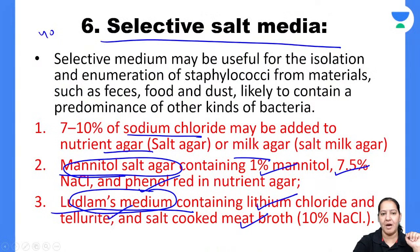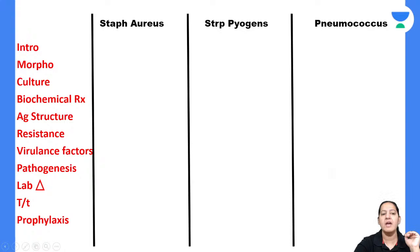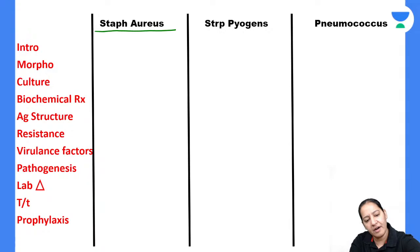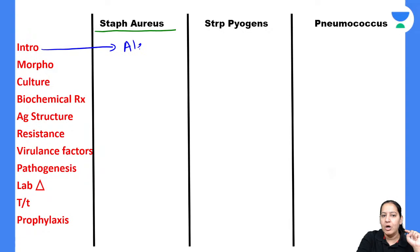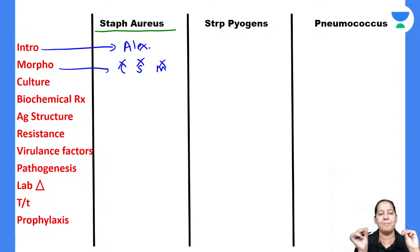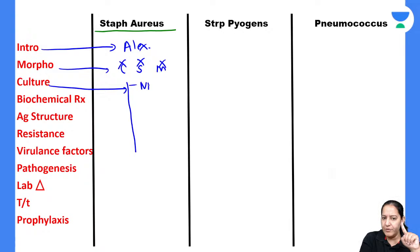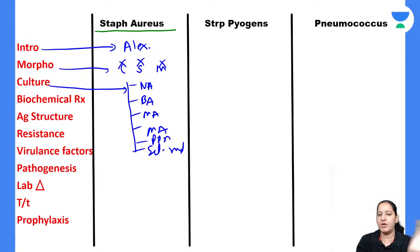I request all students to fill the comparative table. In the introduction, write the name of scientist Alexander who discovered Staphylococcus aureus. In morphology, write three things: it is non-capsulated, non-spore-forming, and non-motile. In the culture section, enumerate the six culture media with one key word for each.